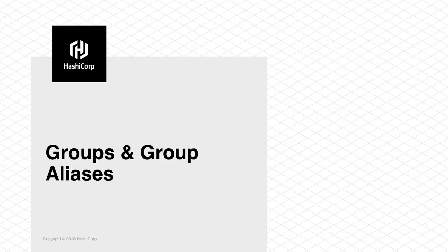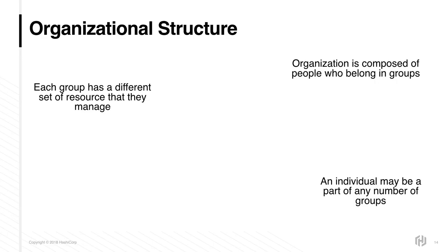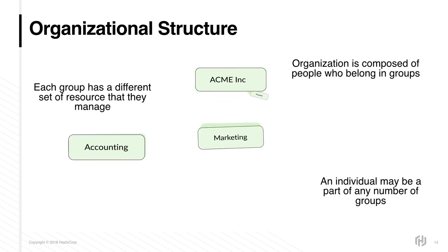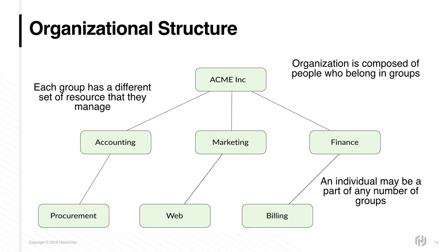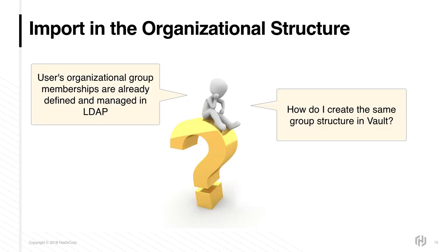In this section, we'll go over groups and group aliases. Organizations tend to have some form of internal structure based on business units. Staff are grouped within these business units, and some staff may participate within and across multiple business units. Each business unit will have a different set of compute resources that need to be managed. Org structures are typically maintained within LDAP services, such as Active Directory. The answer to leveraging group memberships held externally to provide access control within Vault is to use Vault's identity groups.